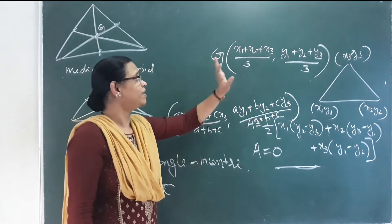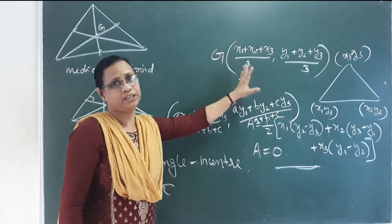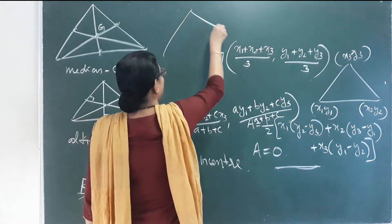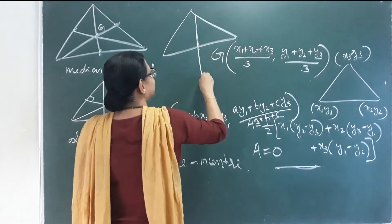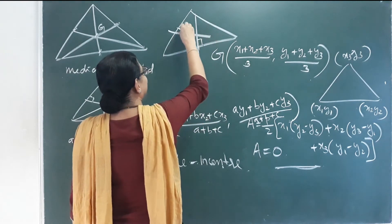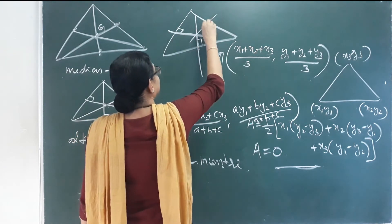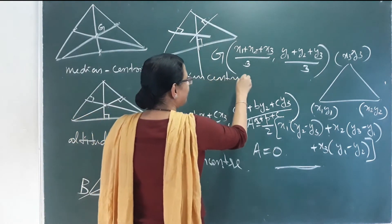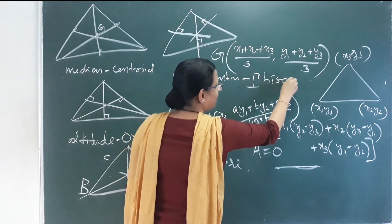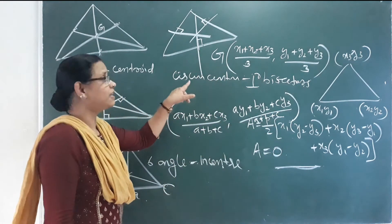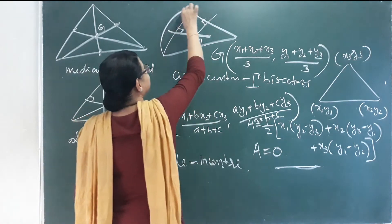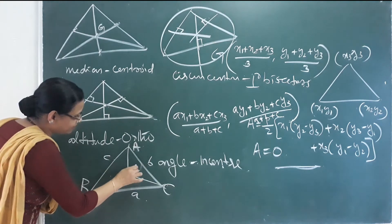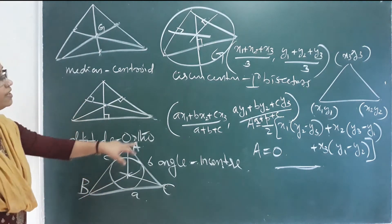The Circumcenter is the point of concurrence of the perpendicular bisectors. This is called the Circum-Center. The perpendicular bisectors are used to define the circumcircle, which we studied in the 10th class circle chapter.